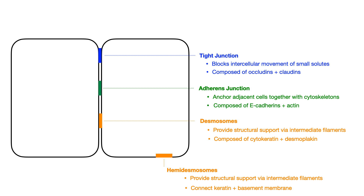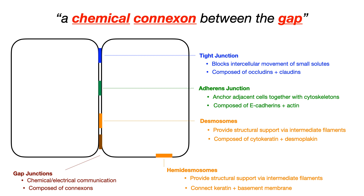The last intercellular junction we need to talk about is gap junctions. Gap junctions permit both chemical and electrical communication between adjacent cells, and they are composed of structures called connexons. My mnemonic is: a chemical connexon between the gap. This tells us we're talking about gap junctions, that they permit chemical and electrical communication, and connexon reminds us of the structure that composes gap junctions.